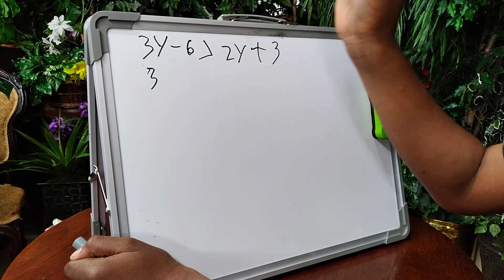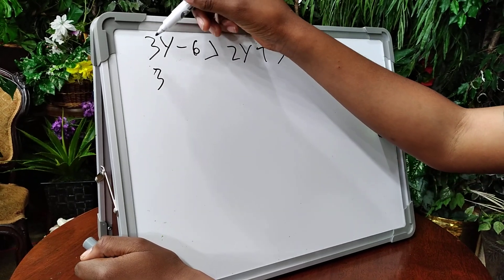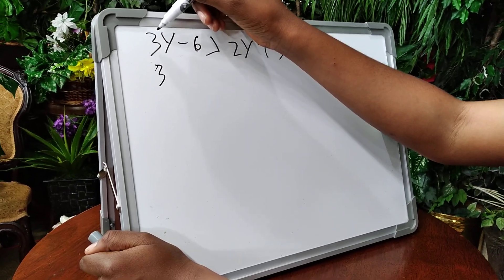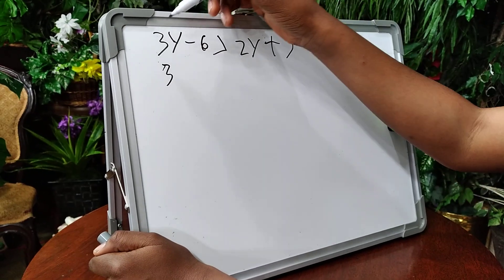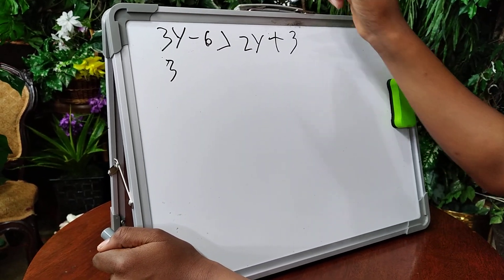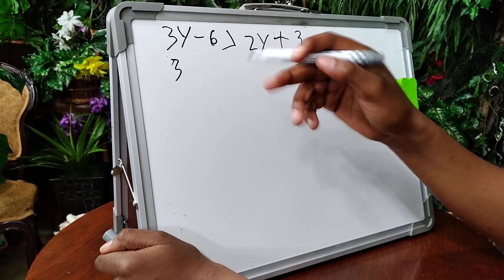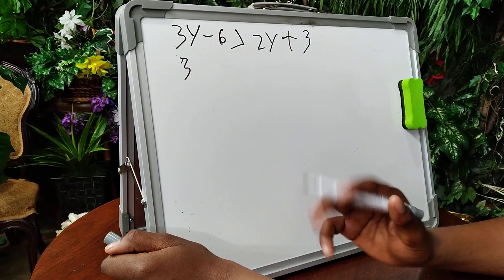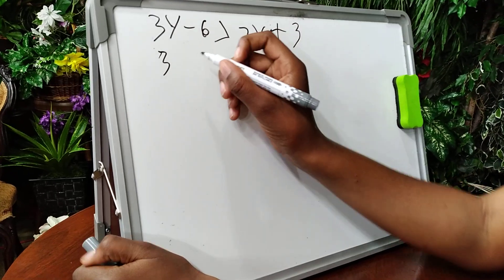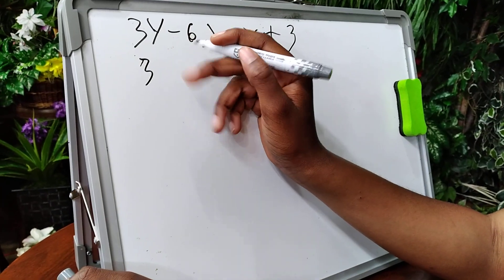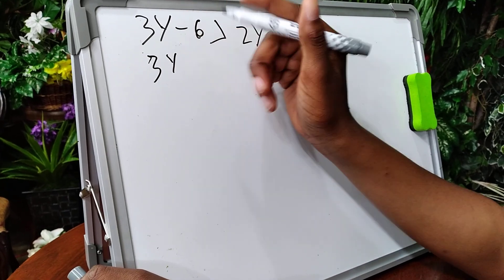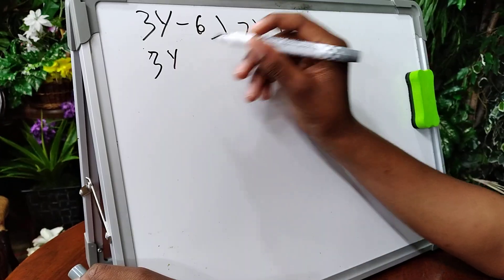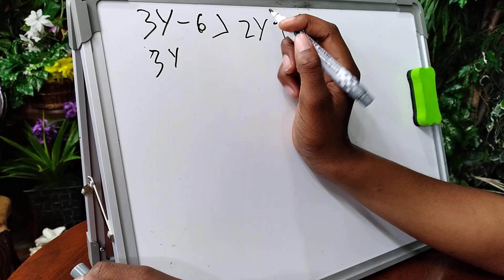There are many ways to do it — you can bring the coefficient over here, or bring the variable over there, or bring the constants over. But how I like to do it is keep the first number in place, then bring the 2y over so it becomes a negative.